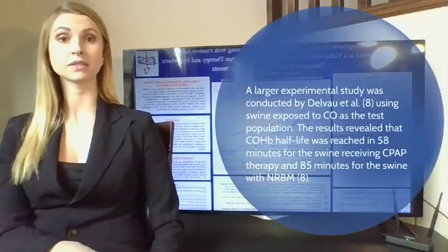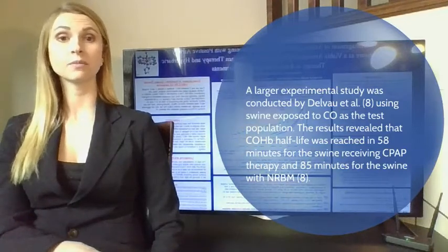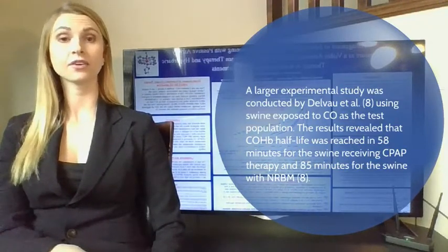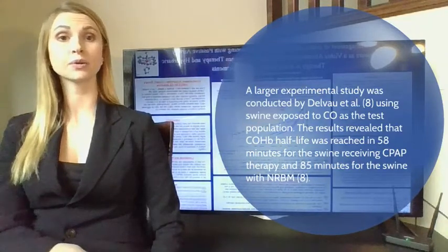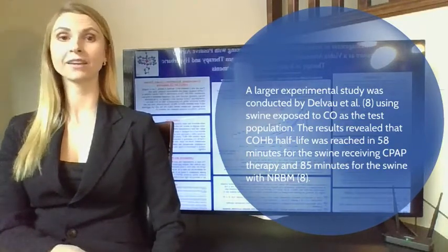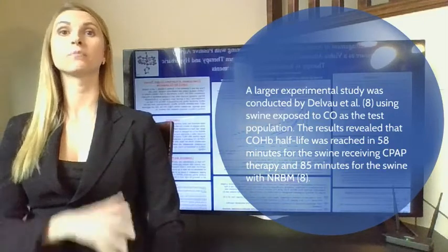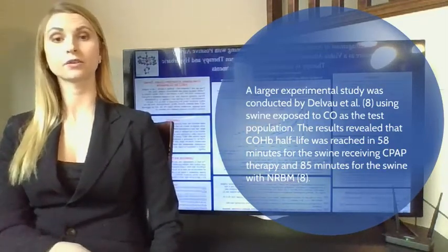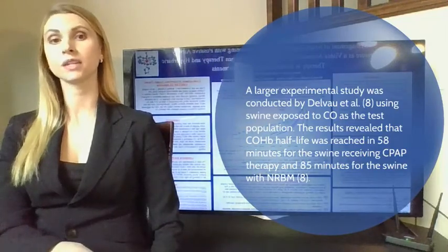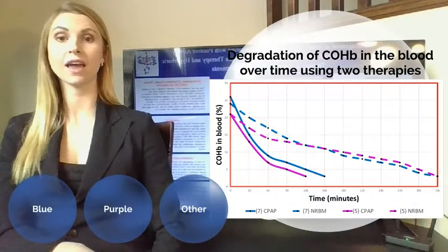A third study, a larger experimental study, was conducted by Downview using swine exposed to carbon monoxide as the test population. Once carboxyhemoglobin levels reached 30%, CPAP and non-rebreather therapy were initiated. A carotid artery catheter was used to gain ABG samples collected at preset time intervals. The results revealed that carboxyhemoglobin half-life was reached in 58 minutes for swine who received CPAP therapy and 85 minutes for swine who received non-rebreather. While this experiment offered a much larger and more reliable population size, the study was conducted on swine, which have a relative affinity for carbon monoxide only 130 times greater than oxygen, so those results were not included in the graph.